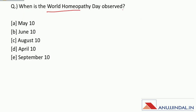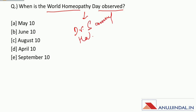When is World Homeopathy Day observed? World Homeopathy Day is the birthday of the founder of homeopathy, Dr. Samuel Hahnemann. Therefore, World Homeopathy Day is observed on 10th April.